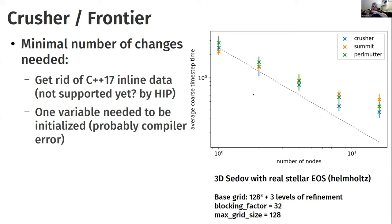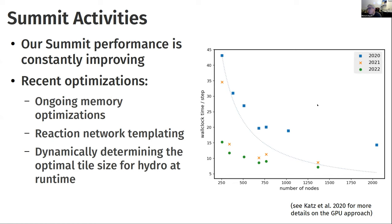Results are shown for a 3D Sedov (point explosion) problem with a coarse grid plus three levels of refinement — a hard load-balancing problem since the blast is growing. Scaling from 1 to 16 nodes: Crusher is blue, Perlmutter is green, Summit is orange. Strong scaling is pretty good out to a factor of 8 drop-off. Castro seems to scale better on Crusher than Summit, possibly due to a faster network.